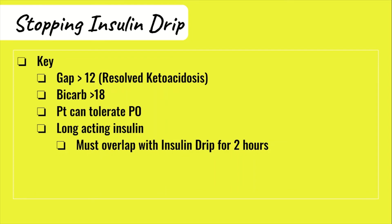Before stopping the insulin drip, a few key criteria must be met: the anion gap must be less than 12, indicating resolution of ketoacidosis; the bicarb must be above 18 to prevent the patient from easily slipping back into metabolic acidosis; and the patient must be able to tolerate oral intake — meaning they can eat rather than relying on D5 infusion. Critically, a long-acting insulin must be ordered and given two hours prior to stopping the drip, so it has time to start working. Without this overlap, you cold-turkey the patient from insulin and they could rapidly return to DKA.